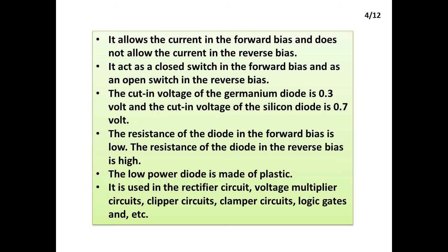The cutting voltage of a germanium diode is 0.3 volts and the cutting voltage of a silicon diode is 0.7 volts. The resistance of the diode in forward bias is low, and in reverse bias is high. The low power diode is made of plastic. It is used in rectifier circuits, voltage multiplier circuits, clipper circuits, clamper circuits, logic gates, and more.